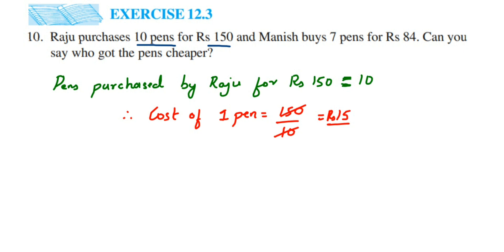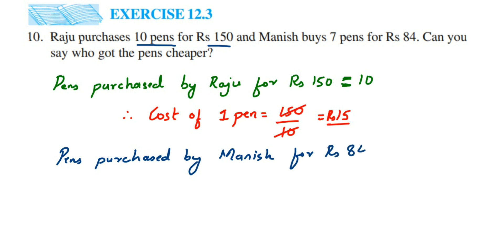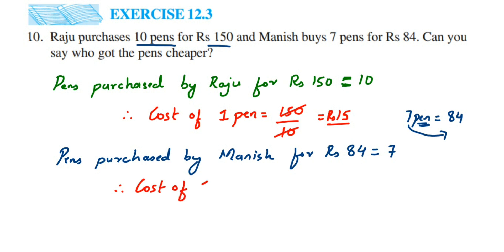Same way, for the case of Manish: pens purchased by Manish for Rs. 84 is equal to 7. He bought 7 pens for 84 rupees. So 7 pens equals Rs. 84 — you have to find out the cost of one pen, so transpose 7 to the other side. So to find out the cost of one pen, divide 84 by 7. 84 divided by 7: 7 ones are 7, remainder 14, 7 twos are 14. So the answer is Rs. 12.